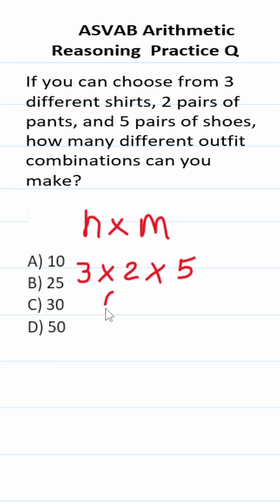Again, three times two is going to be six, so this is six times five. Six times five is 30. So you can make 30 different outfit combinations from these different choices.